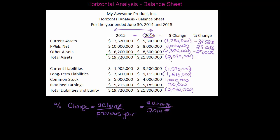Same thing with total assets. Current liabilities are down forty five point four percent. And retained earnings was up just a smidge at point five eight percent — a very small change there.